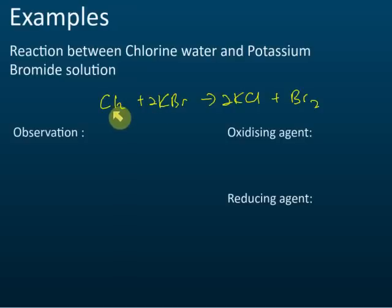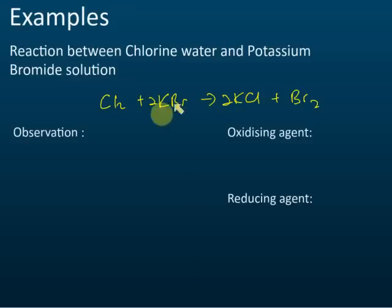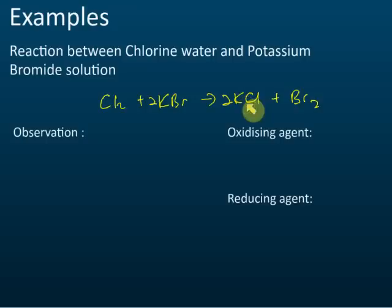For observations: chlorine in water is called chlorine water, and it is pale yellow. As a gas it is yellowish-green. Potassium bromide and bromide are colorless. After the reaction, bromine is formed and dissolves into the water.